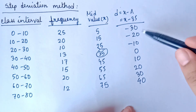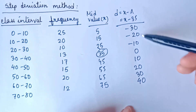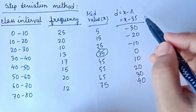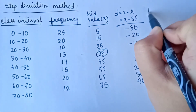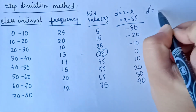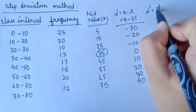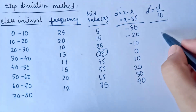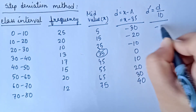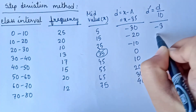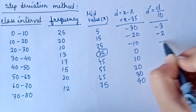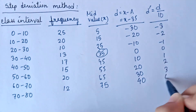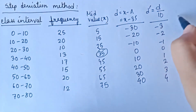After that, again we can see that all the values are multiples of 10, that's why we write D dash equal to D divided by 10. So the values are minus 3, minus 2, minus 1, 0, 1, 2, 3, and 4.